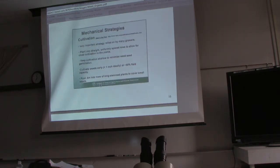Mechanical strategies - cultivation. Very important strategy relied on by many growers. Plant very straight, uniformly spaced rows and allow for close cultivation of these plants. Basically planting in rows so that you can get equipment through that can address your weed issue, whether it be tilling or just mowing. Keep cultivation shallow to minimize weed seed germination. Don't till too deep, only just the area that you need for your plant. Cultivate weeds early - once they get over an inch. Push less than an inch ideally at 50% field capacity. Push dirt into rows of long stemmed plants to cover small weeds. That's kind of like tilling, it's top surface tilling.